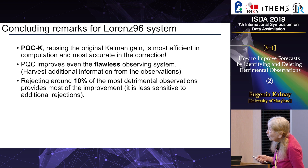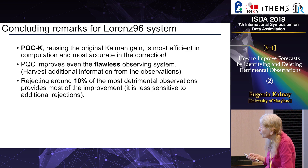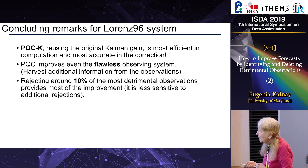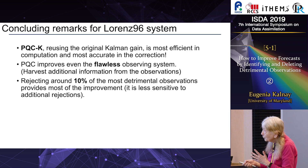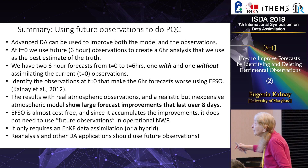You can harvest additional information from the observations by knowing whether they are detrimental or beneficial. Rejecting about 10% of the most detrimental observations provides most of the improvement. Summary: using future observations to do PQC — advanced data assimilation can be used to improve both the model and the observations.